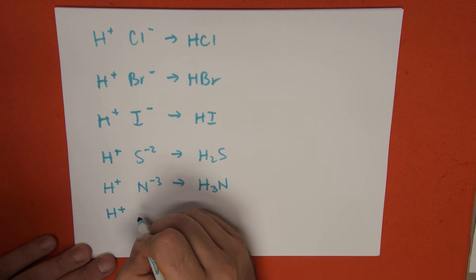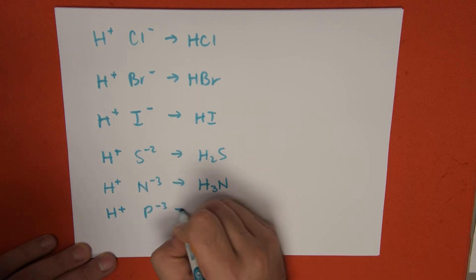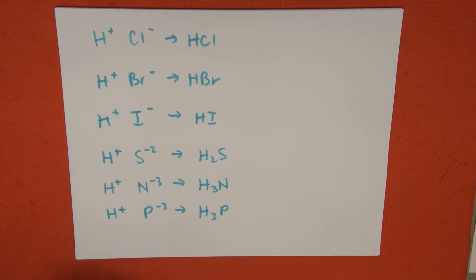Then we have H+, phosphorus minus three, giving us H3P. Finally, what is the naming style for hydracids?